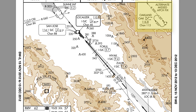In the upper right-hand corner, you can see an inset box showing the alternate missed approach fix. On most charts, the missed approach holding fix is actually too far to show on the plan view, and is therefore shown in an inset box such as the alternate missed approach fix on this chart. So if you see a dashed line going off the chart, look for the inset box to find out exactly what the holding fix is.